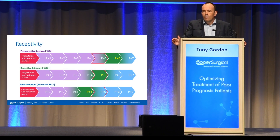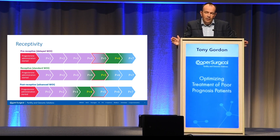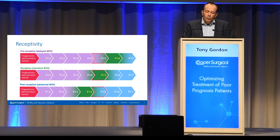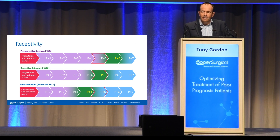We report three different statuses of the window of implantation. The receptive state — your textbook state — is five days after progesterone administration, and that applies for about 70% of women. What you do right now is optimal for those women. But for some women, the window of implantation is what we call pre-receptive: if you're putting the embryo back at day five, it's not yet ready. Or it's post-receptive — if you put back on day five, the optimal stage for receptivity has already passed.